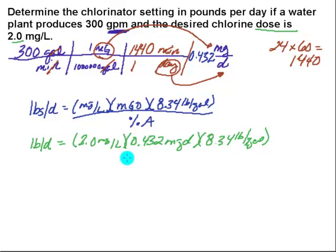And we're going to divide by the percent of available chlorine. Now in this case, they didn't actually tell me any percent available chlorine, and it does say the chlorinator setting. So I'm going to assume that we're using chlorine gas, which is 100%, but this percent always has to go in as a decimal. So this is just going to become a 1 down here on the bottom.